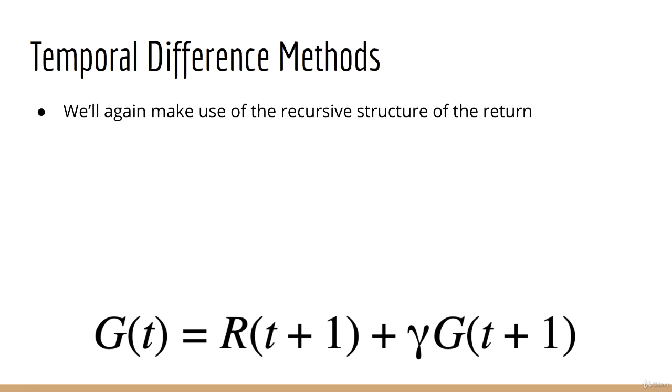The return at time t can be expressed in terms of the return at time t plus 1. You saw how this helped us both create and solve the Bellman equation. Now it's going to help us once again.